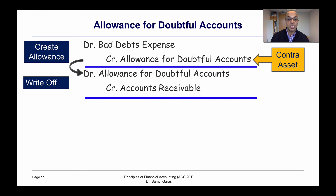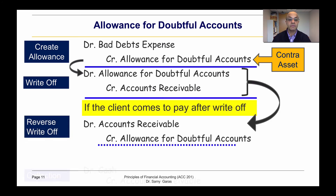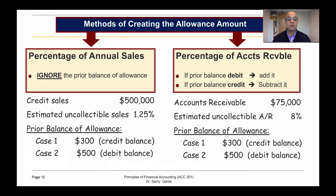If the uncollectable amounts turn out to be collected, then we reverse the write-off journal — we debit accounts receivable and credit allowance — and then we debit cash and credit accounts receivable. So this is in brief the cycle of the journals.